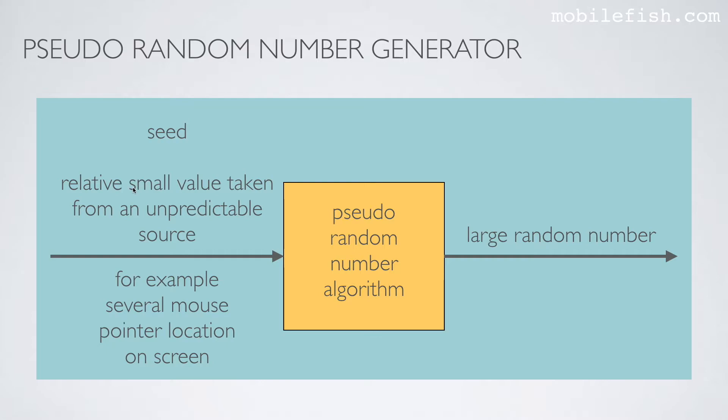The seed is a relatively small value and it is taken from an unpredictable source. For example, it can be a mouse pointer location on the screen. It can be keystrokes. The seed can be taken from different sources.